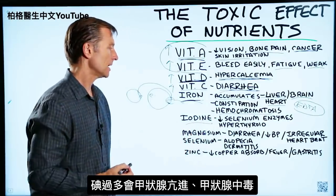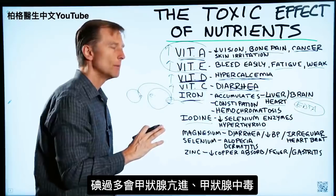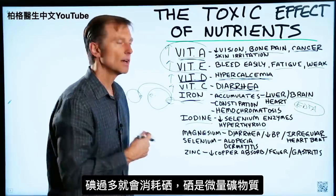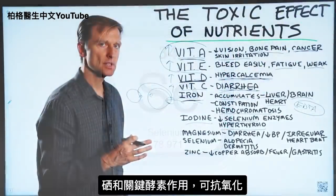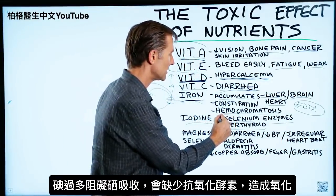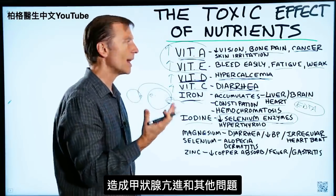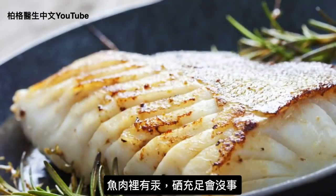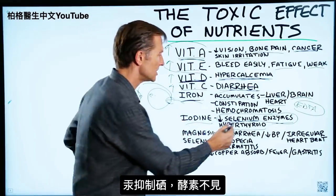With iodine, too much can create a hyperthyroid condition and a toxic effect on the thyroid, while too little can create hypothyroidism. The problem with too much iodine is it depletes other minerals like selenium, a trace mineral involved in key enzymes that act as antioxidants. Too much iodine binds up the selenium, you lose those enzymes, and you get more oxidation — especially in the thyroid, where hydrogen peroxide can build up and cause problems. Similarly, mercury in fish inhibits selenium and causes you to lose these enzymes.